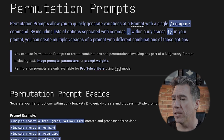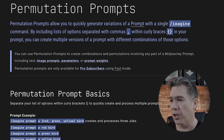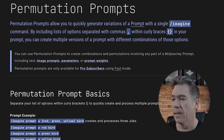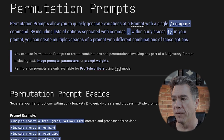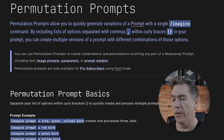Via Mid Journey documentation, permutation prompts allow you to quickly generate variations of a prompt with a single forward slash imagine command, by including lists of options separated with commas within curly braces in your prompt. You can create multiple versions of a prompt with different combinations of those options — which I know sounds like a lot. So let's just break it down into its simplest form and see how it works.